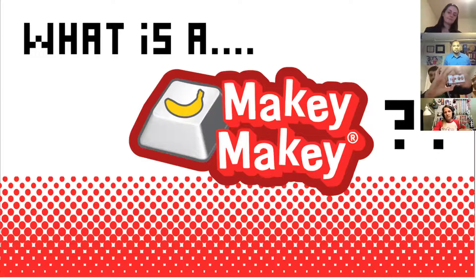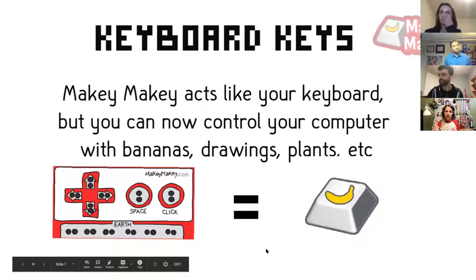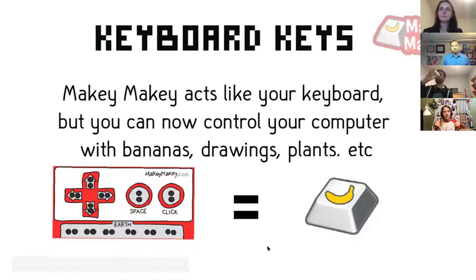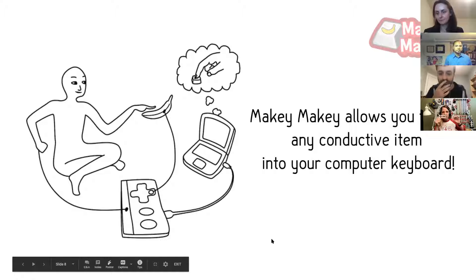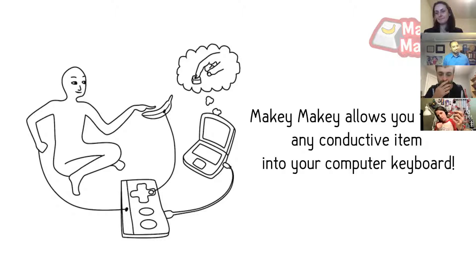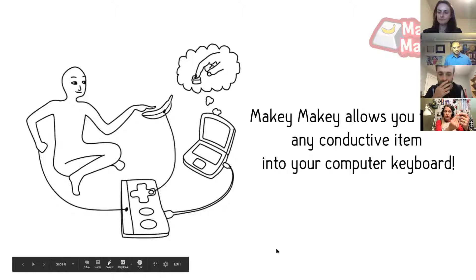We'll talk about fun ways to use Makey Makey even if you don't have one. You take alligator clips and plug them into anything conductive — bananas, drawings, plants. Anything you connect from earth to the key press will now work like a computer key. It looks like a Nintendo controller because it actually controls your up, down, left, right inputs. On the back there are more inputs: W-A-S-D-F-G, which are common controls for many old-school computer games.